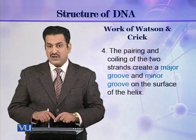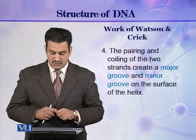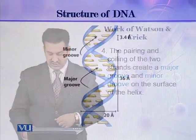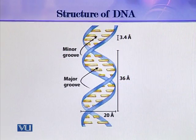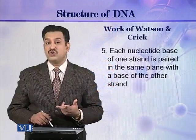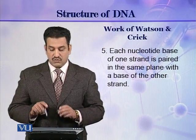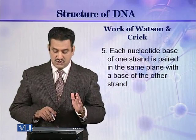The pairing and coiling of the two strands of DNA creates a major groove and a minor groove on the surface of the helix. As you can see in this picture, this is the major groove and this is the minor groove. These two grooves are formed because the two strands first join together and then coil around an imaginary single axis, forming both the major and minor grooves.